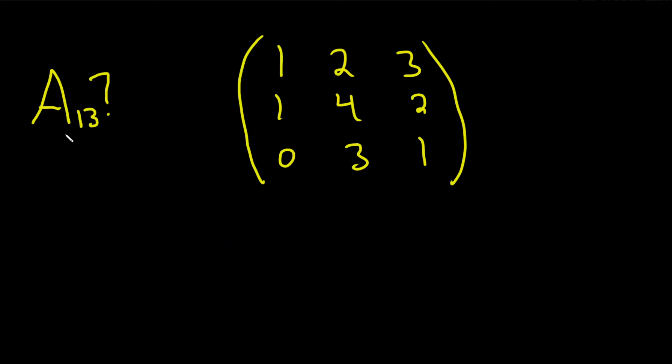In this problem, we're going to find a sub 1, 3. This is the cofactor of the entry in the first row, third column.